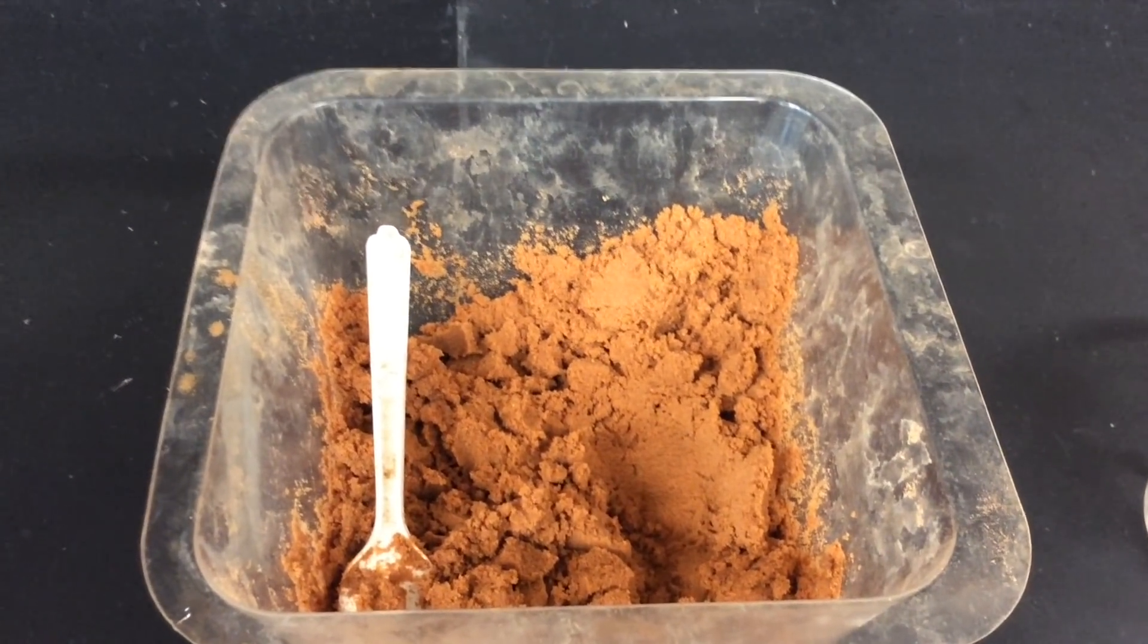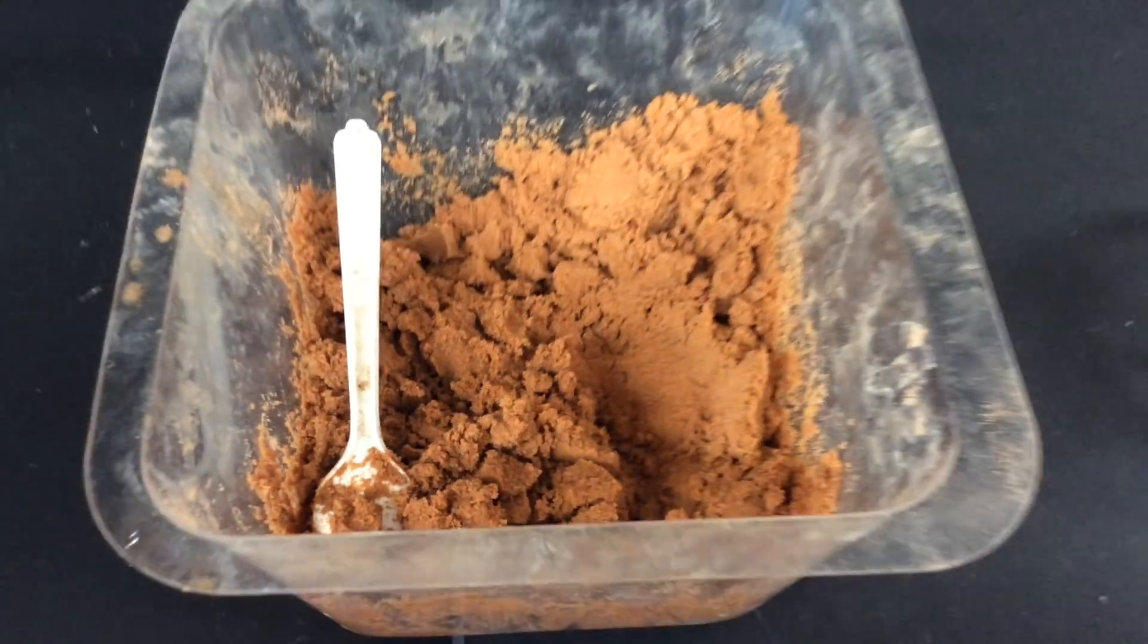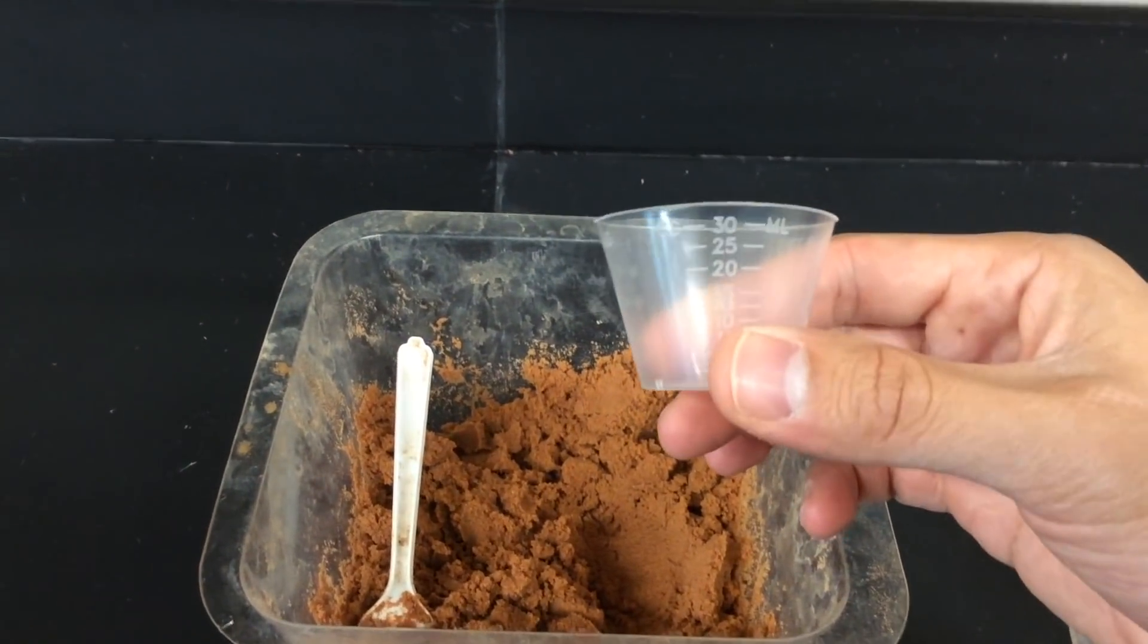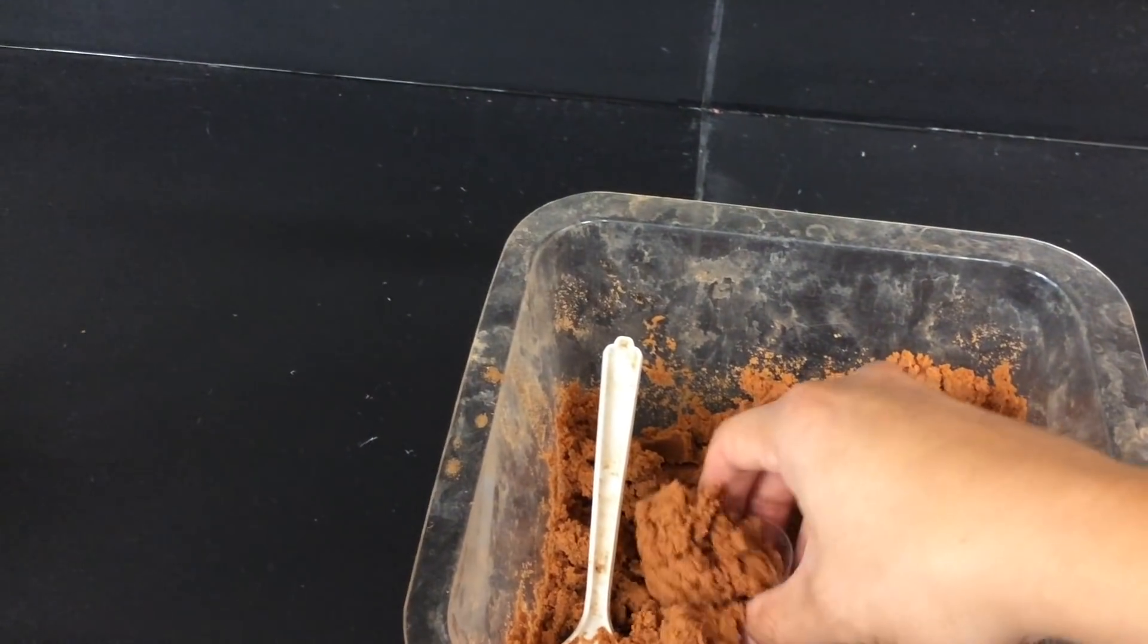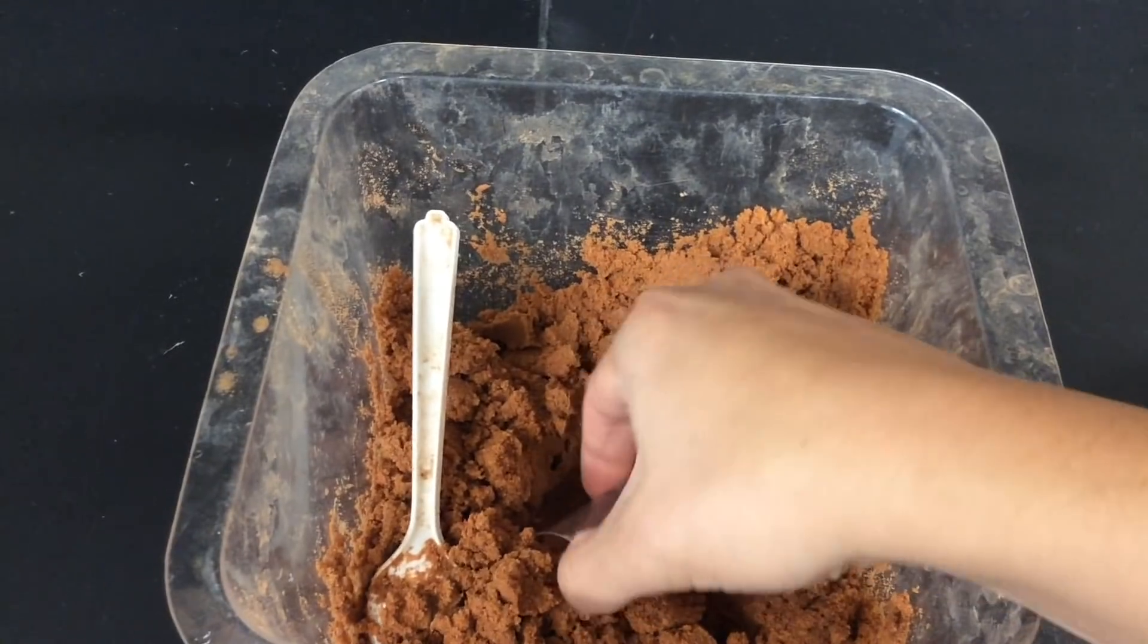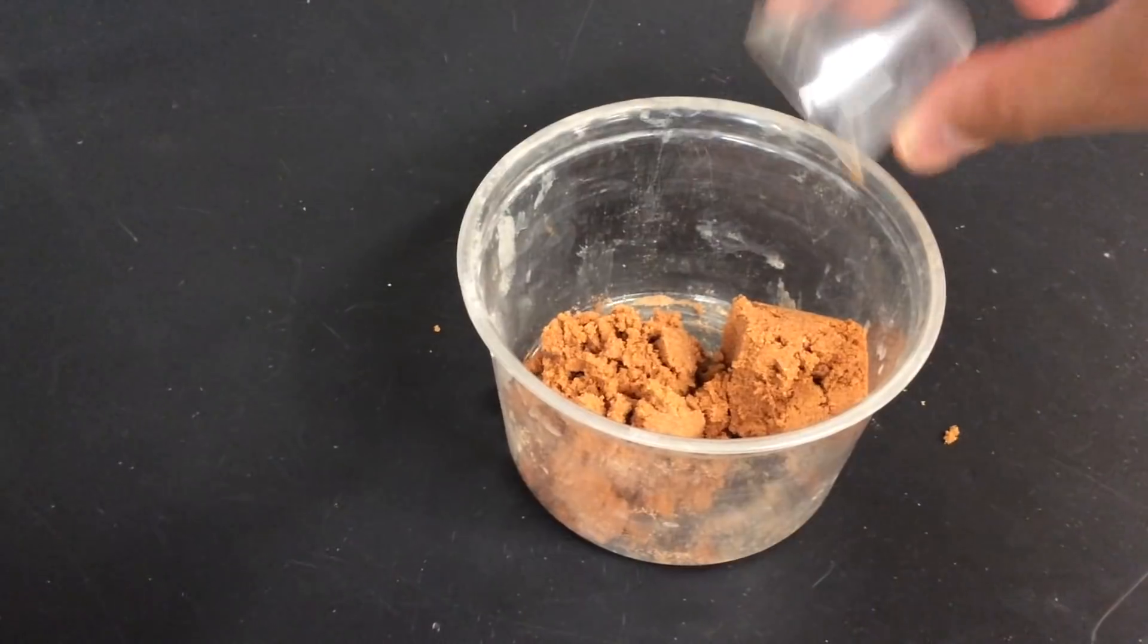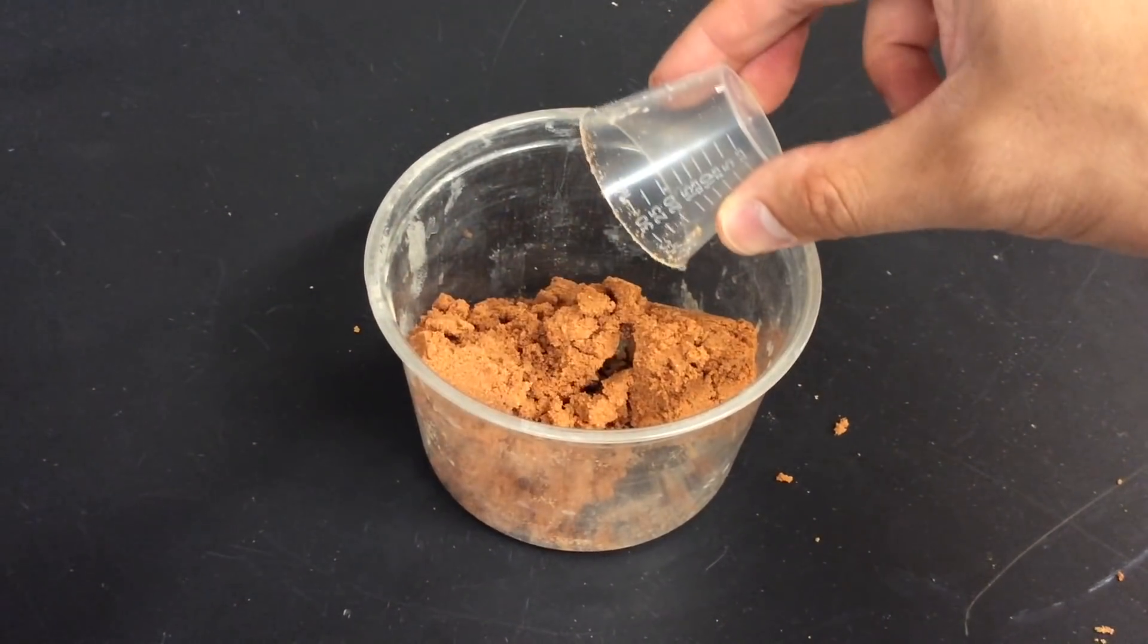For this experiment, you're going to need 90 milliliters of this beautiful, beautiful sand. So what you're going to do is you're going to take your 30 milliliter graduated cup and you're going to just fill that with sand three times and put it into your plastic cup over here. So 30 milliliters, 60 milliliters, 90 milliliters.